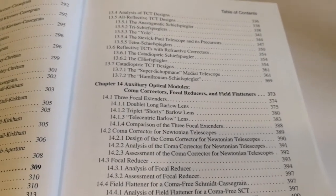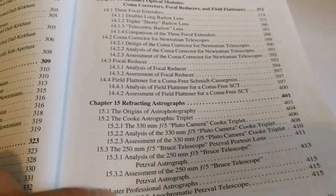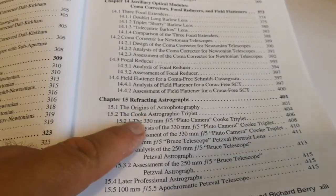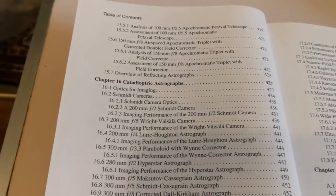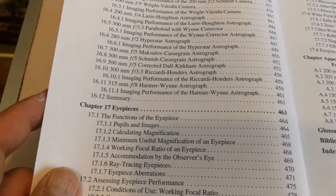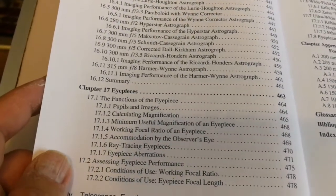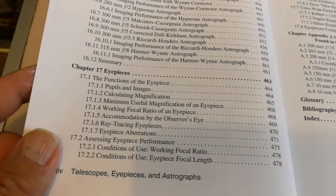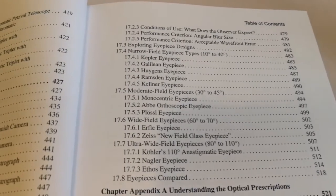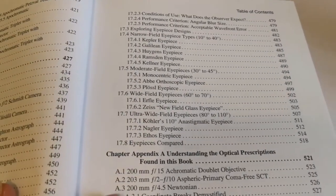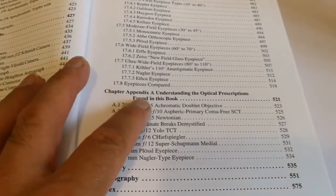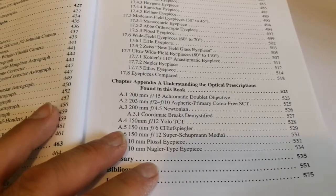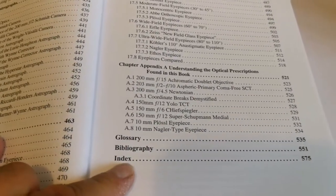Coma correctors, focal reducers, field flatteners, refracting astrographs, and catadioptic astrographs — that's like Newtonian Maksutov or Newtonian Schmidt. Eyepieces covering 10 to 40, 30 to 45, 60 to 70, 80 to 110 degrees. Appendix A: Understanding the optical prescriptions found in this book. Glossary, Bibliography and Index.